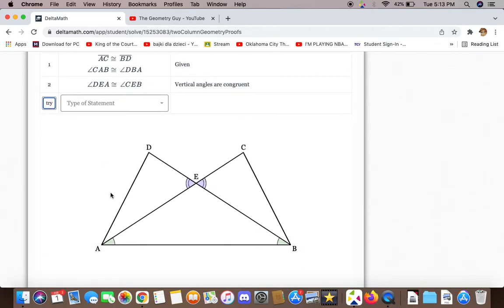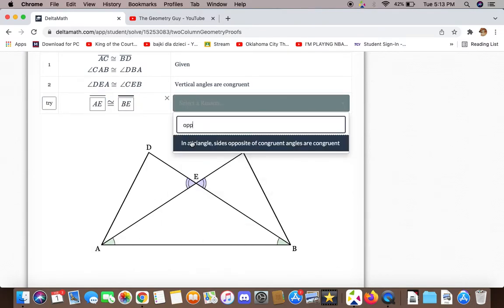We can also say that AE and BE are congruent to each other because in the triangle, sides opposite of congruent angles are congruent.